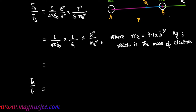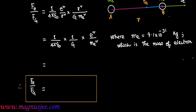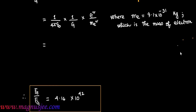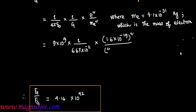Putting in the values, Fe/Fg equals 9 × 10⁹ divided by 6.67 × 10⁻¹¹, multiplied by (1.6 × 10⁻¹⁹)² divided by (9.1 × 10⁻³¹)². This gives 9 × 2.56 divided by 6.67 × (9.1)², giving approximately 4.17 × 10⁴².